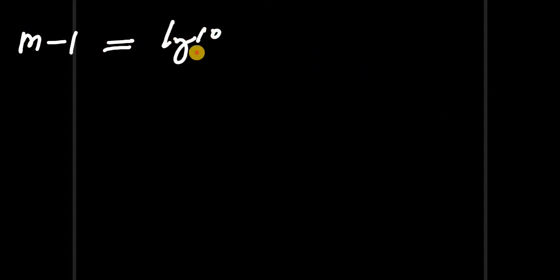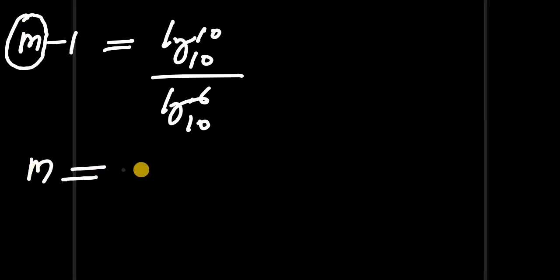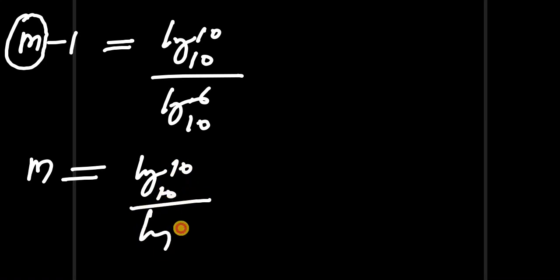So we have m minus 1 equals log of 10 to the base 10 divided by log of 6 to the base 10. From here we can make m the subject: m equals log of 10 to the base 10 divided by log of 6 to the base 10, plus 1.